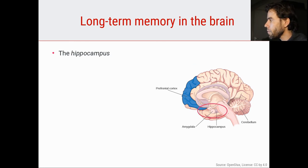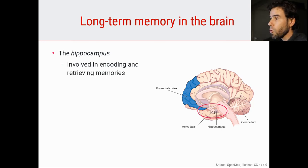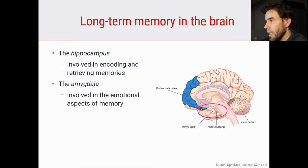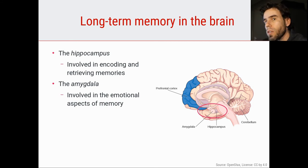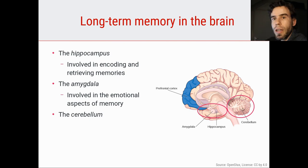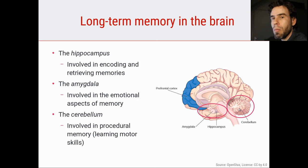For example, we have the hippocampus, located here in the temporal lobe, which is involved in encoding and retrieving memory. Damage to the hippocampus will give you amnesic problems. There's also the amygdala, located very near the hippocampus, which is involved mostly in the emotional aspects of memory — linking memories to emotions. Because emotions are such an important aspect of memory, we will talk about them in more detail in the next section. We also have the cerebellum, the little cabbage-like structure in the back of the brain, which is strongly involved in procedural memory and learning motor skills.